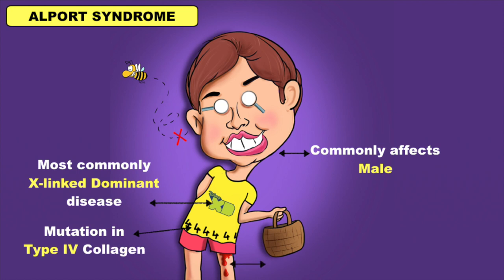Can you see the blood coming out of his pants? This will help you to remember that the earliest feature of Alport syndrome is hematuria.